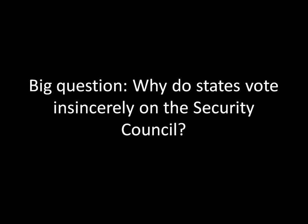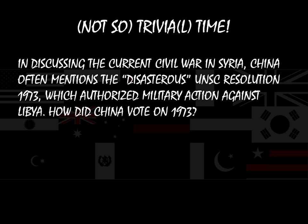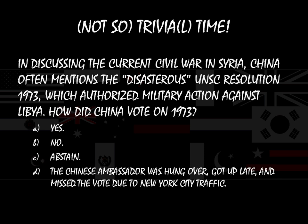Let's kick things off with a trivia question. In discussing the current civil war in Syria, China often mentions the disastrous United Nations Security Council resolution number 1973, which authorized military action against Libya. How did China vote on 1973? Did they vote yes, no, did they abstain, or was the Chinese ambassador hungover, got up late, and missed the vote due to New York City traffic?